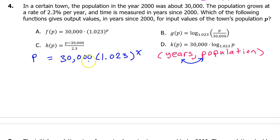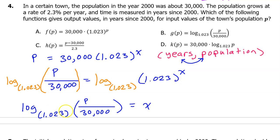All we have to do is solve this function for x. So let's start by dividing both sides by 30,000. We will have P over 30,000 equals 1.023 to the x power. To get rid of the 1.023, we need to take the log base 1.023 of both sides of this equation. On the right-hand side, the log base 1.023 cancels out the base 1.023, leaving only x. Now we have a function whose input is the population and whose output is the number of years since 2000. This function matches answer B.